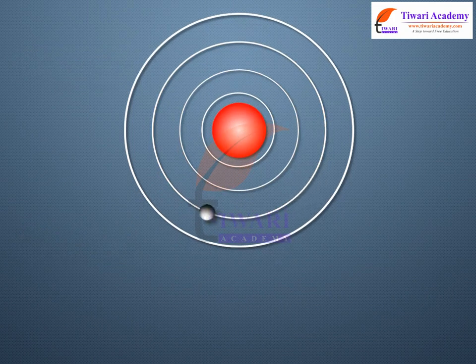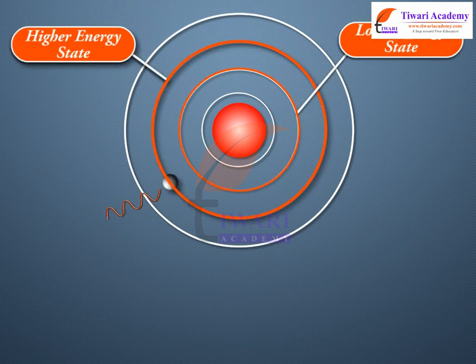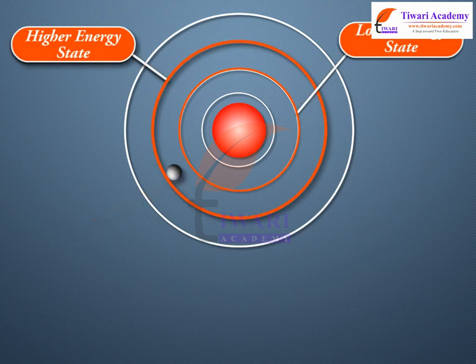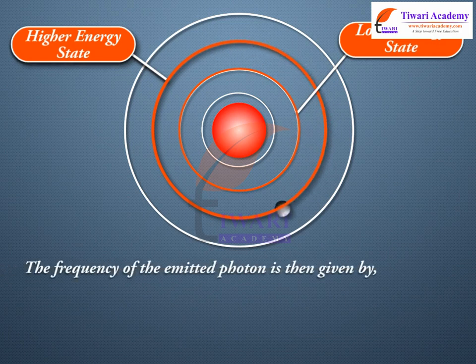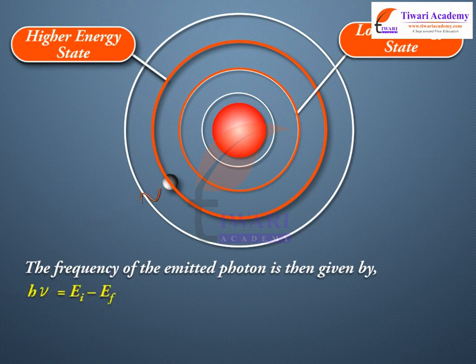Bohr's third postulate states that an electron might make a transition from one of its permissible non-radiating orbits to another of lower energy by losing the energy equal to the energy difference between the initial and final states. The frequency of the emitted photon is then given by h*nu = Ei - Ef.